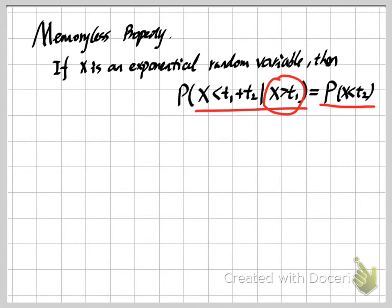The theoretical reason is that all customer arrivals are independent of each other. No matter how many customers we've already seen, what happens from now on is a new, independent experiment — it doesn't depend on our history or how many customers have already arrived. This is why we call it the memoryless property of the exponential random variable.